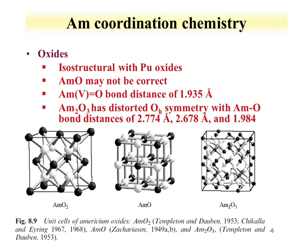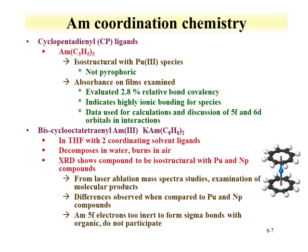Structures have been evaluated for the dihalide, trihalide, and mixed oxyhalide species. The coordination of americium oxides is shown to be isostructural with plutonium oxides, which is not surprising since they have similar ranges of oxidation states. The Am2O3 has a distorted Oh symmetry, and the bond distances for the americium-oxygen have been evaluated. The organometallic chemistry of americium has been examined primarily with the CP ligands. The Am(CP)3 compound has been found to be isostructural to the plutonium-3 species, and spectroscopy indicates it is highly ionic, providing information for calculations on 5F and 6D orbital interactions.